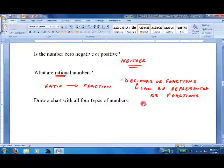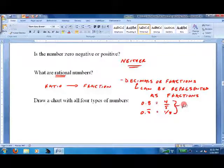So for example, 0.8 is 4 fifths, and 0.3 repeating is 1 third. And these are both rational numbers.